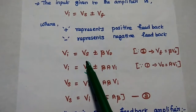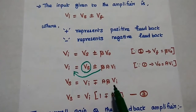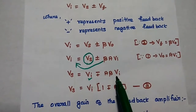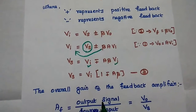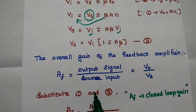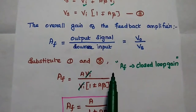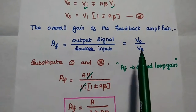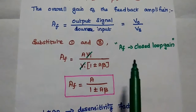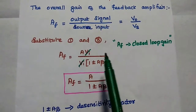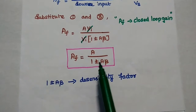We obtain the value of Vs by rearranging: Vs = Vi(1 ∓ A·beta) — this is equation 3. Here, plus represents positive feedback and minus represents negative feedback. The overall gain of the feedback amplifier is AF = V0/Vs. Substituting V0 = A·Vi and Vs = Vi·(1 ± A·beta), the Vi terms cancel, giving the overall gain as AF = A / (1 ± A·beta). Here AF represents the closed-loop gain and A is the open-loop gain.